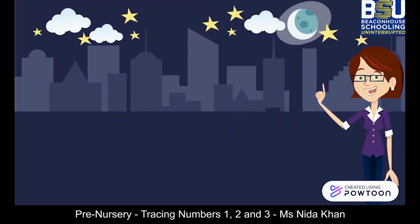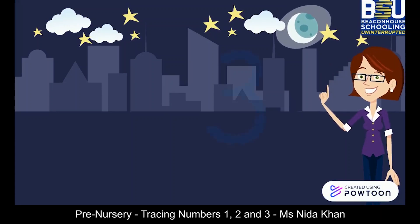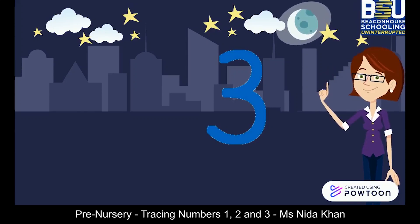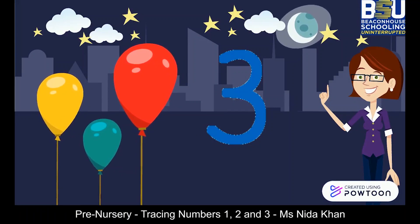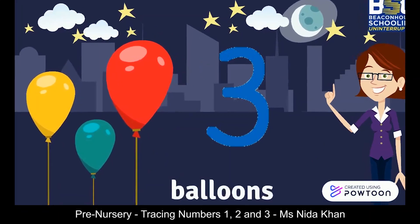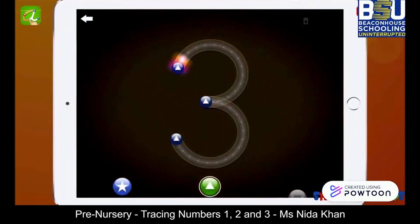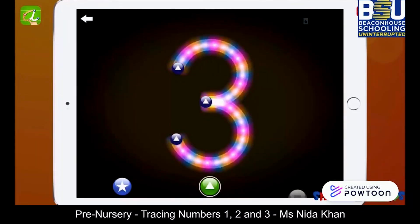So kids, now guess which number will come after number 2. Yes, perfect — it's number 3. Oh, I can see some balloons here. Let's count with me: 1, 2, 3 — 3 balloons. Let's form number 3. Start from the top, make a curve halfway, then make another curve all the way around. That's how we form number 3.